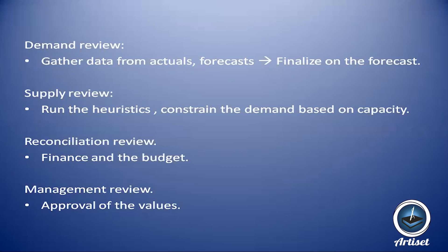If supply can only provide 300 due to capacity constraints, they hold meetings and agree whether to proceed with just 300 or to purchase new machines to increase quantity. They consider how important the demand is. They come up with another number — say 400 — in a constraint review.